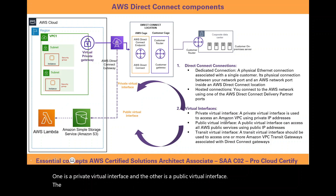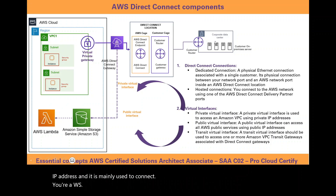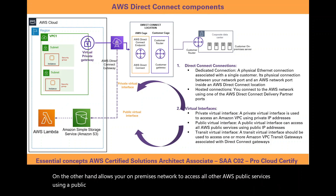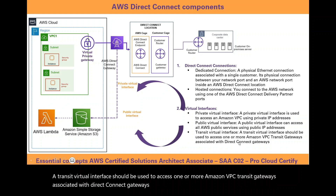There are two virtual interface types. A private virtual interface is used to access an Amazon VPC using a private IP address, and is mainly used to connect your AWS Virtual Private Cloud with your on-premises network. A public virtual interface allows your on-premises network to access all other AWS public services using a public IP address. A transit virtual interface should be used to access one or more Amazon VPC transit gateways associated with Direct Connect gateways.